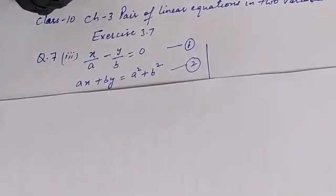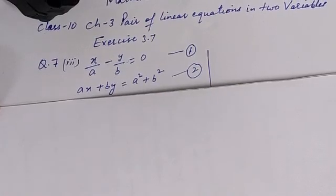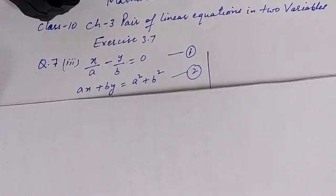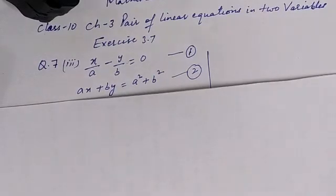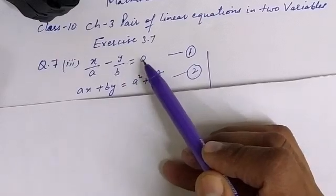Solve this question. This is taken from class 10 chapter 3, pair of linear equations in two variables, exercise 3.7, question 7. The third part is x over a minus y over b is equal to 0.